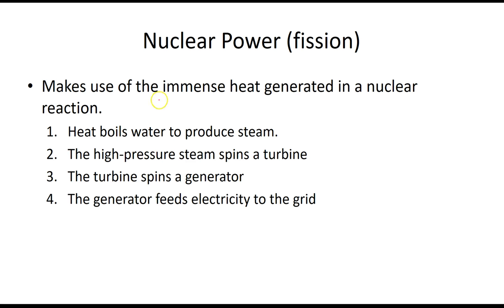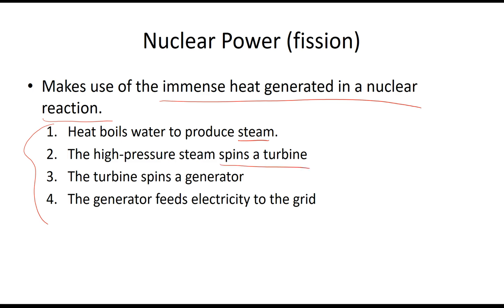The immense heat generated in a nuclear fission reaction boils water to produce steam. This is basically how most power in the U.S. is produced — steps one through four. In a nuclear power plant, fission produces the heat, which boils water to produce steam. That steam under high pressure spins a turbine, which spins a generator that feeds electricity out through wires — eventually powering your lights, TV, or phone.